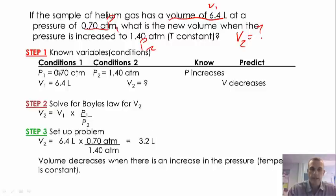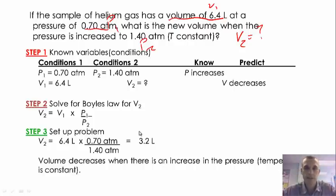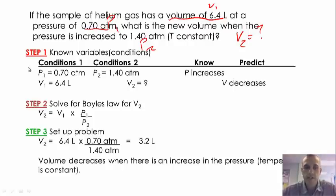Think about this: the pressure was originally 0.7 and now it's 1.4, so it doubled. And the volume went from 6.4 down to 3.2, so it went in half. That's inversely proportional — the amount the pressure goes up is the amount the volume goes down by equal proportion. We solved for V2 by rearranging P1V1 equals P2V2, and you can solve for any of those variables using that equation.